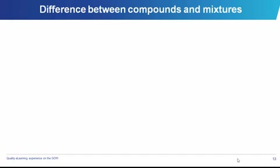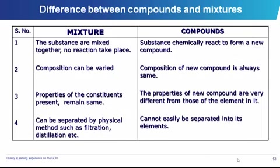Differences between compounds and mixtures: compounds are chemically combined, mixtures are physically combined. In compounds, the components are fixed and definite; in mixtures they can vary. In compounds, a new substance is formed, while in mixtures the elements remain as they are — it is still what you put in. In mixtures you can easily separate the components from each other, but in compounds this is not possible.